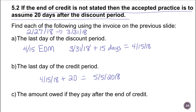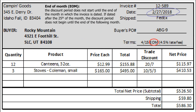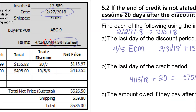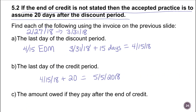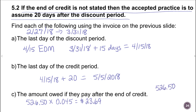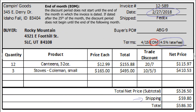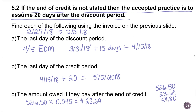The amount owed if they pay after the end of credit — on this one there was actually a 4.5% late fee. That means we have to add extra money onto what we owe on this invoice. The $526.50 is our subtotal, so we take $526.50 and multiply by the penalty amount of 4.5%, and that means we have to pay an extra $23.69. So we'll take $526.50, add $23.69, and then also add the shipping of $59.80, giving us a total of $609.99.